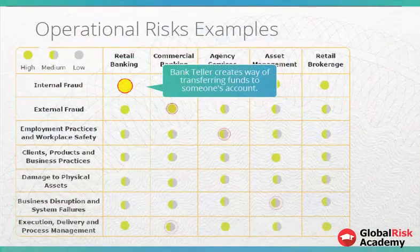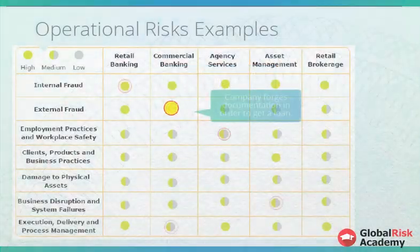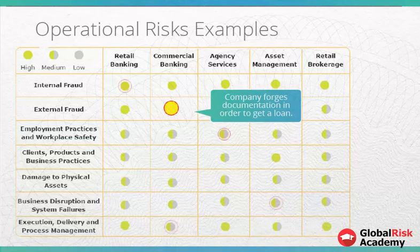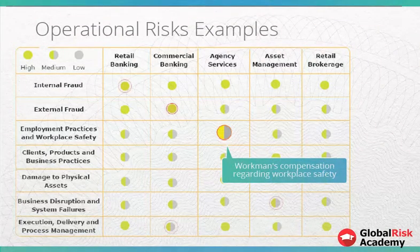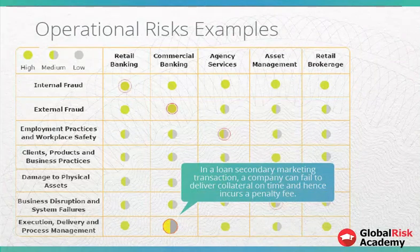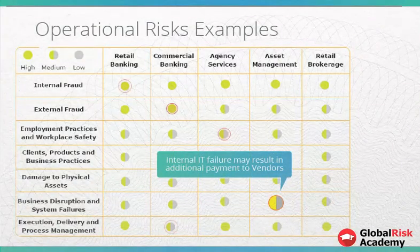The following chart shows some common examples of operational risks. When a bank teller creates a way of transferring funds to someone's account, the impact on bank losses may be high. Another high risk is when a company forges documentation in order to gain a loan. Workman's compensation regarding workplace safety may have a medium impact. In a loan secondary marketing transaction, a company can fail to deliver collateral on time and hence incurs a penalty fee.